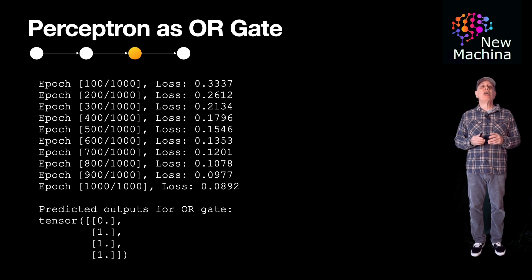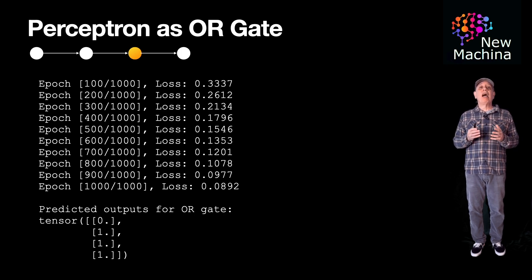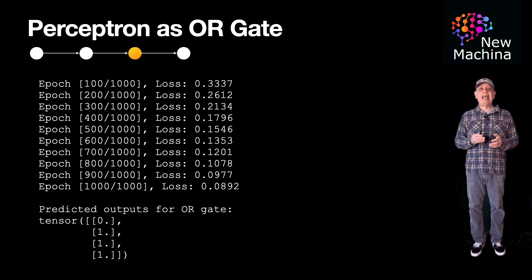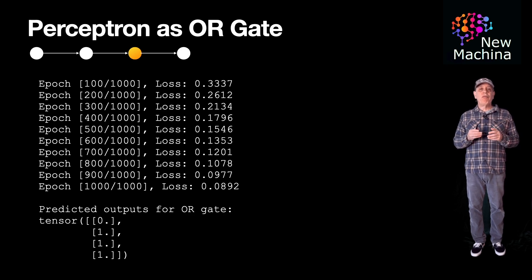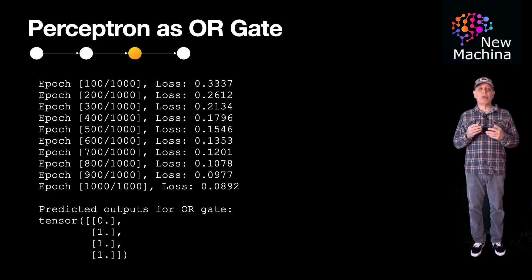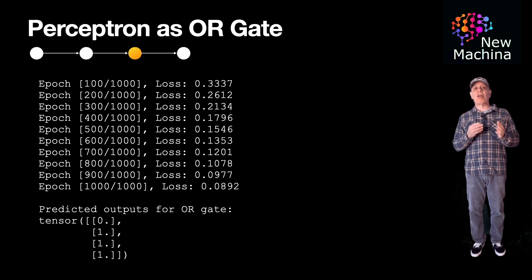Okay, so feel free to download this Python code — the GitHub URL is in the YouTube description. And you can see how easy it is to implement an OR gate with a Perceptron model using PyTorch. If you look at the GitHub project, I also included an example of the Perceptron implementing an AND gate as well as a NOT gate.